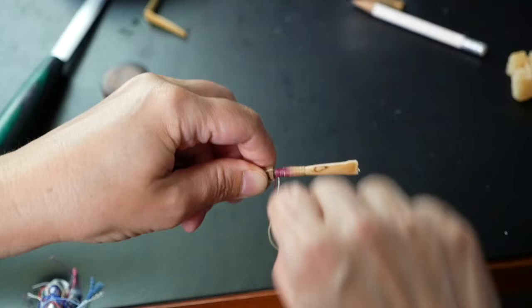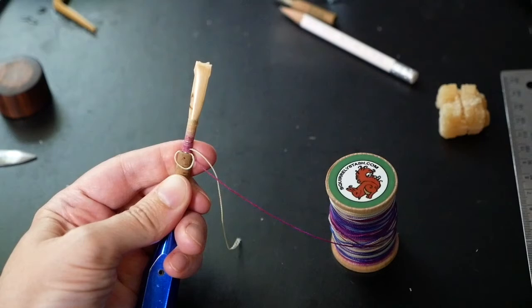I go down three wraps to the cork. I use my left index finger to pinch the wrapping thread in place so that I can pick up my razor blade and cut.